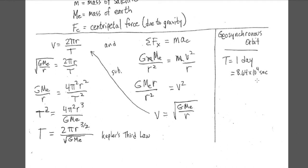Let's introduce the term geosynchronous orbit. That is a very specific radius of orbit that produces a period exactly one day long. A geosynchronous orbit means a satellite remains above the same spot on Earth as it rotates, matching the planet's rotation, so it's always in the same spot in the sky. For that to be true, it needs to be in the equatorial plane.